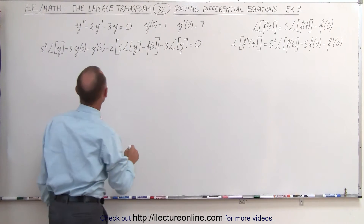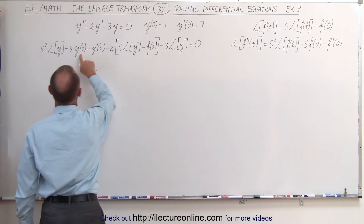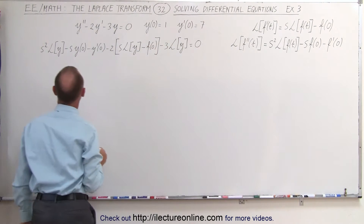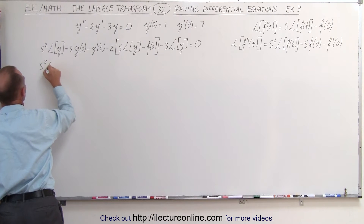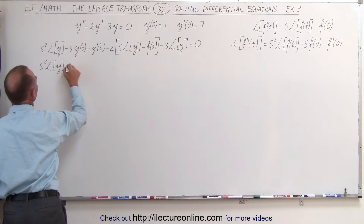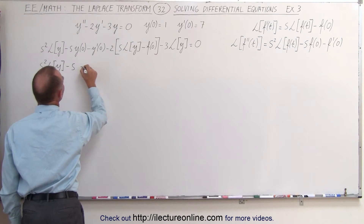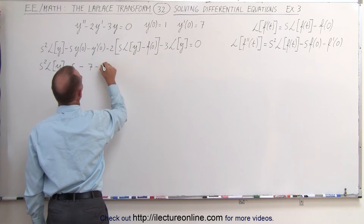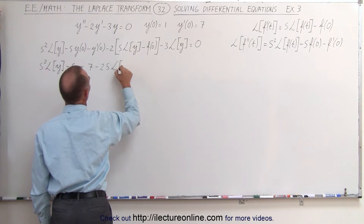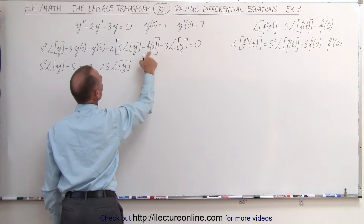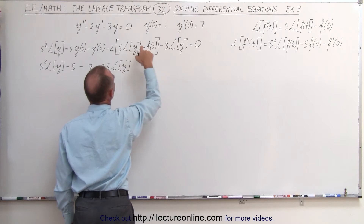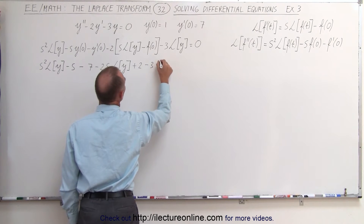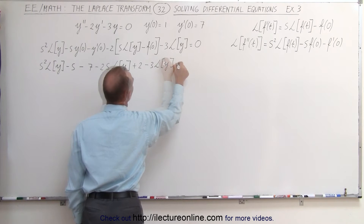Now we can go ahead and plug in what these are equal to. Notice the function evaluated at 0 is equal to 1, and the derivative evaluated at 0 is equal to 7. So this becomes s squared times the Laplace transform of y, minus s times y at 0, which is 1, minus y prime at 0, which is 7. Now minus 2s times the Laplace transform of y, and since the function evaluated at 0 is equal to 1, minus 2 times minus 1 gives a plus 2. And here we get minus 3 times the Laplace transform of y, and that equals 0.